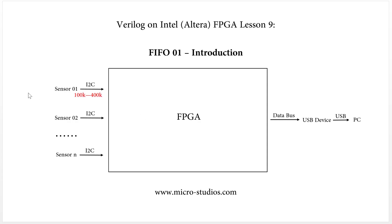For the sensors, the I2C bus data rate is usually from 100K to 400K. For USB, the rate is from 480 Mbps to 5 Gbps, which is very fast. We can design the data bus at the same speed as the USB speed.